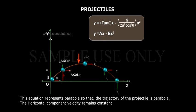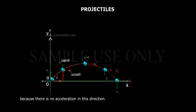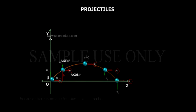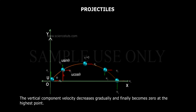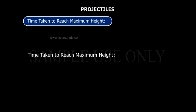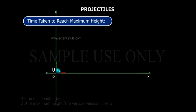The horizontal component of velocity remains constant because there is no acceleration in this direction. The vertical component of velocity decreases gradually and finally becomes zero at the highest point.